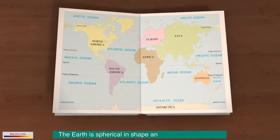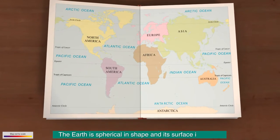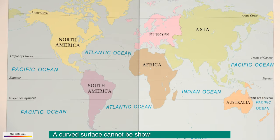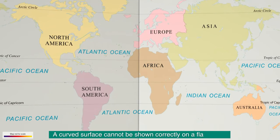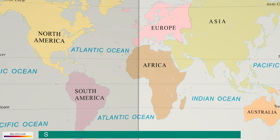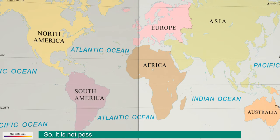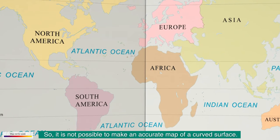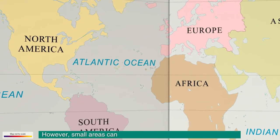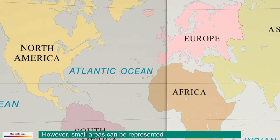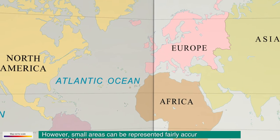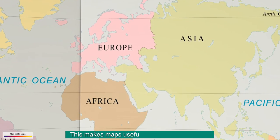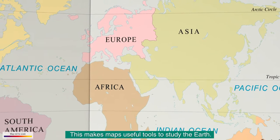The Earth is spherical in shape and its surface is curved. A curved surface cannot be shown correctly on a flat surface such as paper. So, it is not possible to make an accurate map of a curved surface. However, small areas can be represented fairly accurately on maps, which makes maps useful tools to study the Earth.